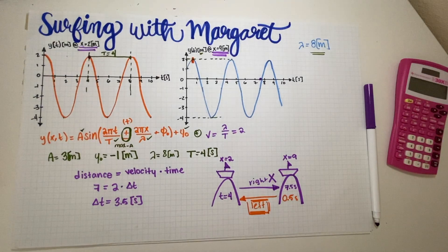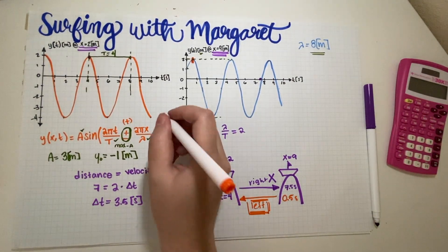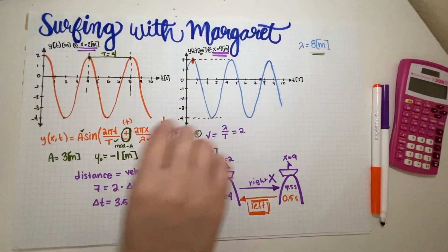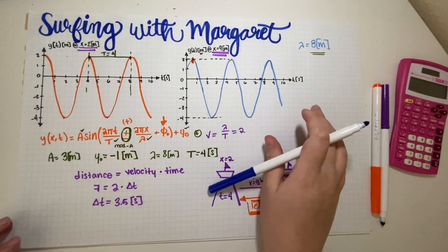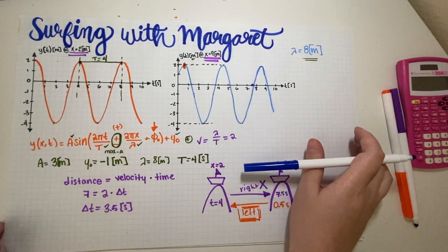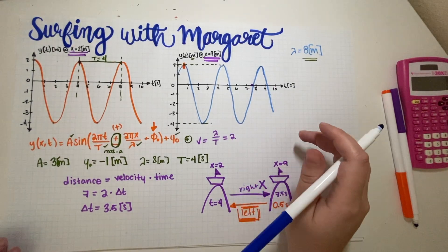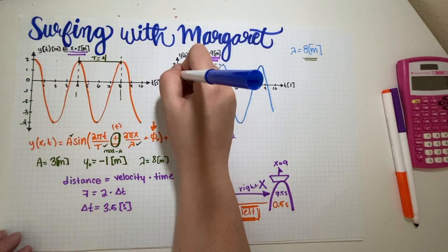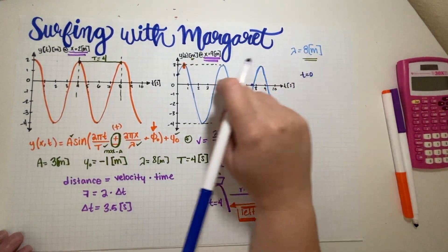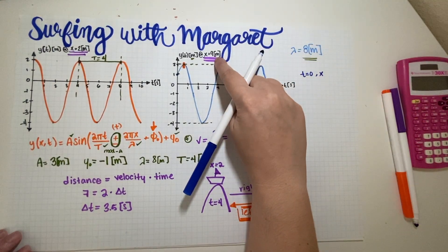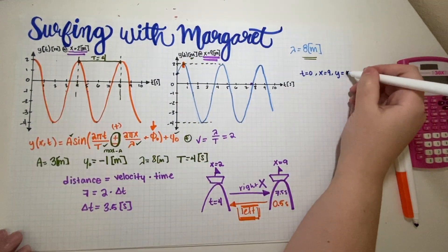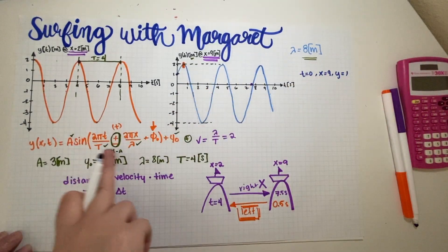Now we have most of the equation. The only thing remaining is finding the phase constant — I always leave that for last because it's easiest on your soul. The method I use is substitution: pick one known point from the graph and plug everything in.